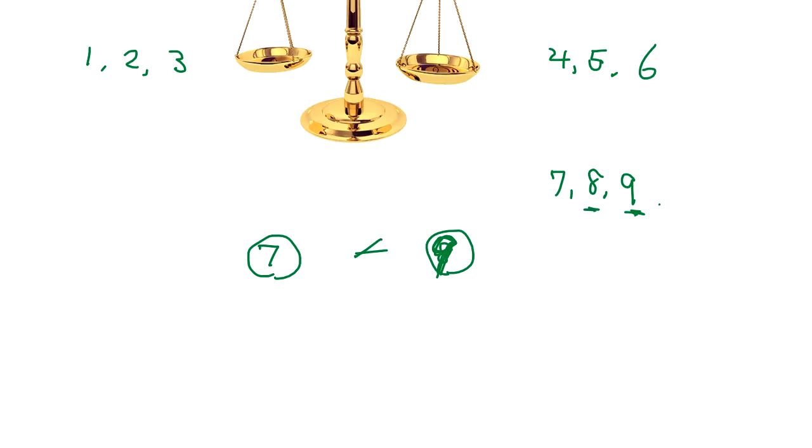Eight was either this way or this way or this way with seven, so you can tell eight was heavier or lighter. So if this is balanced, we can tell exactly which one is fake and how heavy they are.